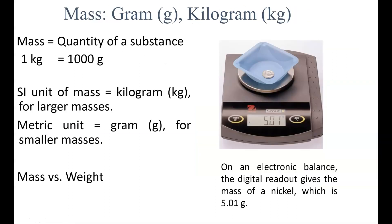Mass is the quantity of a substance. It can be measured in grams or kilograms. Notice this relationship that one kilogram is equal to 1000 grams. We'll talk a little bit more about how we determine that relationship when we look closer at the metric units.